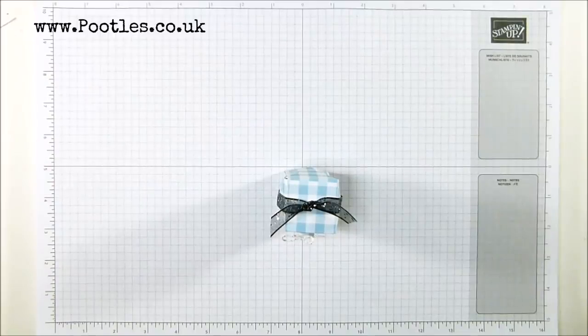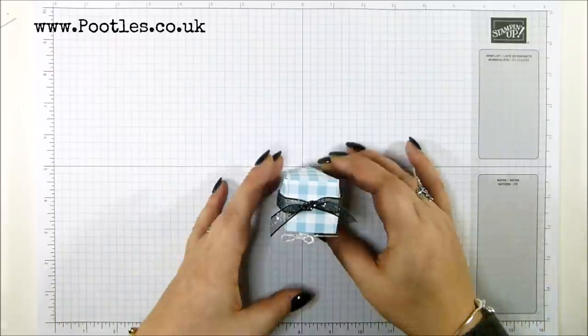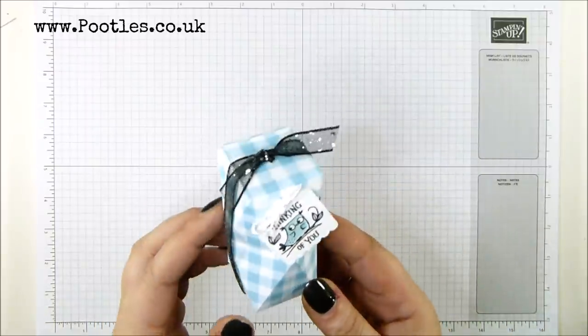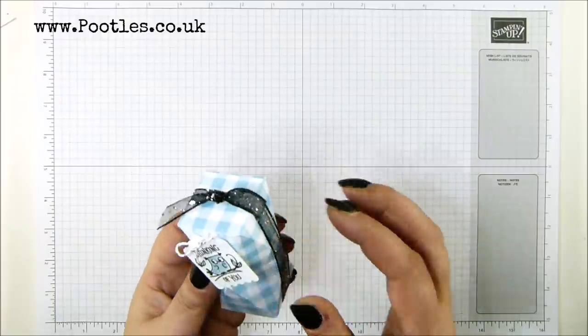Hi there, it's Sam from Pootles.co.uk. Thank you very much for joining me today. Today's project is this one. It's a double faceted treat box with Gingham Gala.